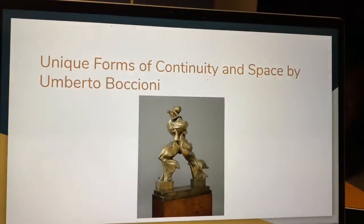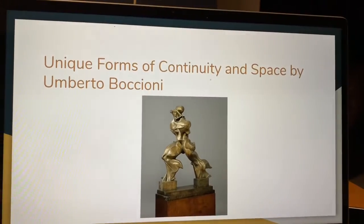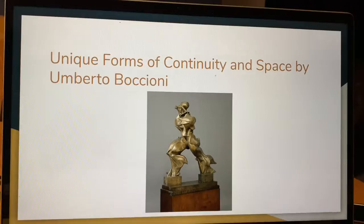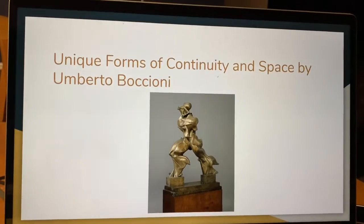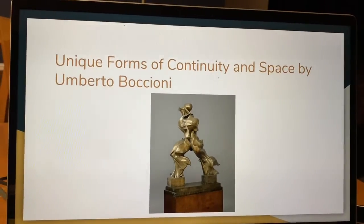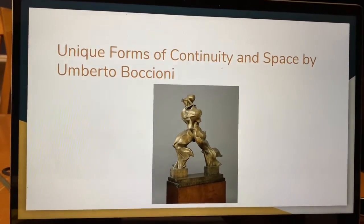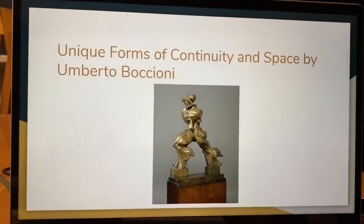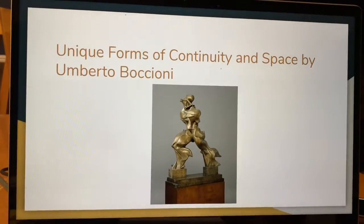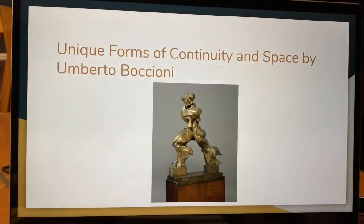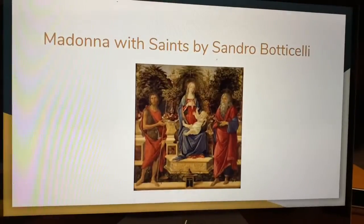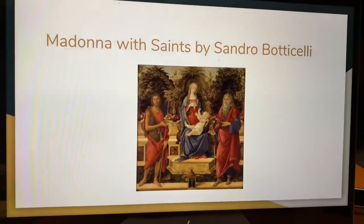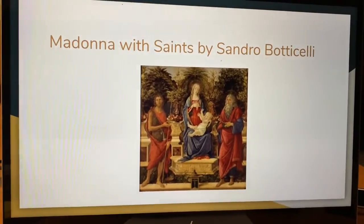The fifth artwork in my exhibit is Unique Forms of Continuity in Space by Umberto Boccioni. It is a bronze sculpture with dimensions of 3 feet 8 inches by 2 feet 11 inches. It was created in 1913.